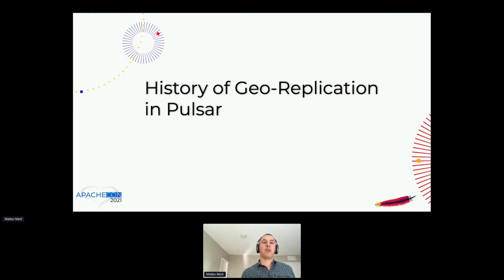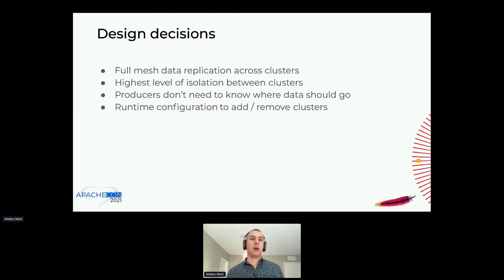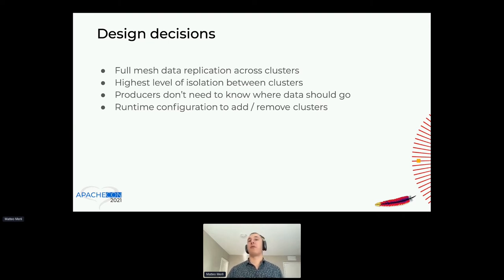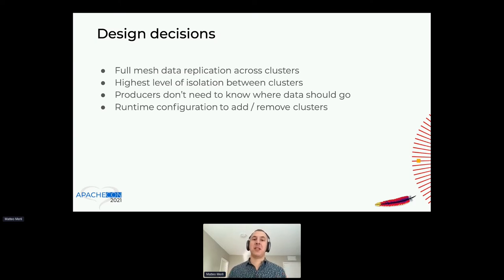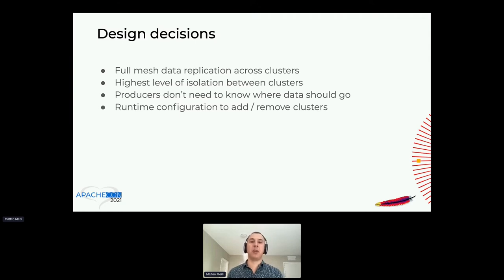The replication process started at the very beginning. The idea was to have a full mesh of data replication across multiple clusters, with the highest level of isolation between them. If a cluster has a failure or is taken down, we don't want other clusters to be affected. Data will accumulate, but there should be no performance degradation or malfunctioning in the other clusters. As a producer, when publishing data, you don't need to know where your data is going — you publish on your local broker and data gets replicated elsewhere, but you don't need to specify it.